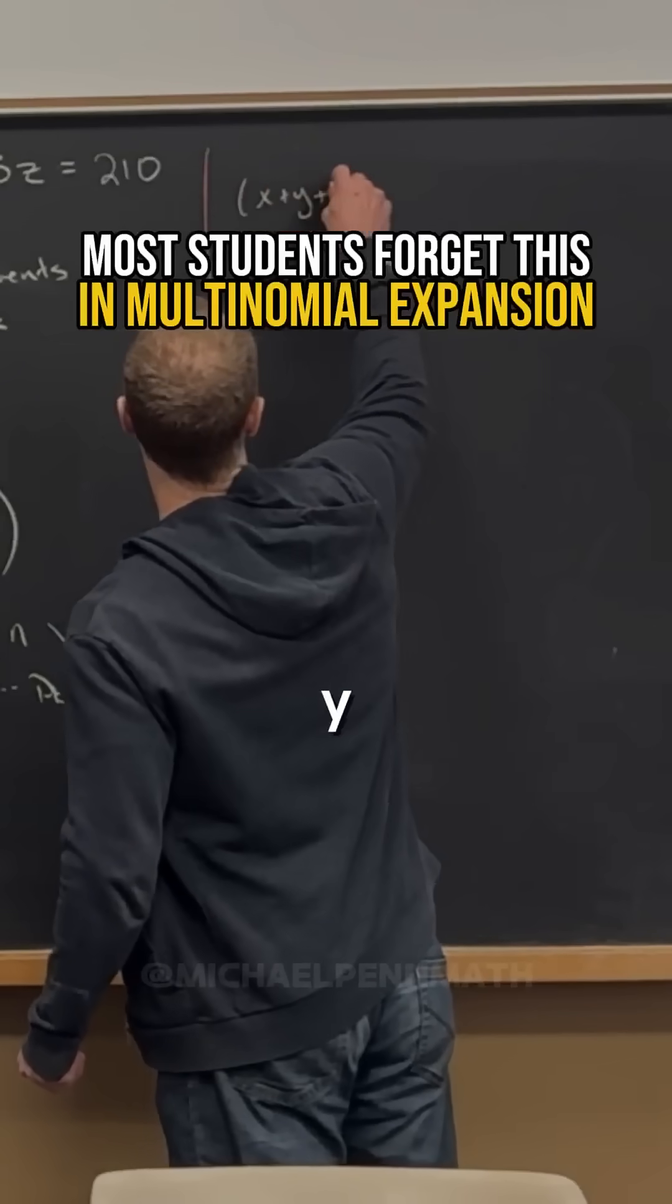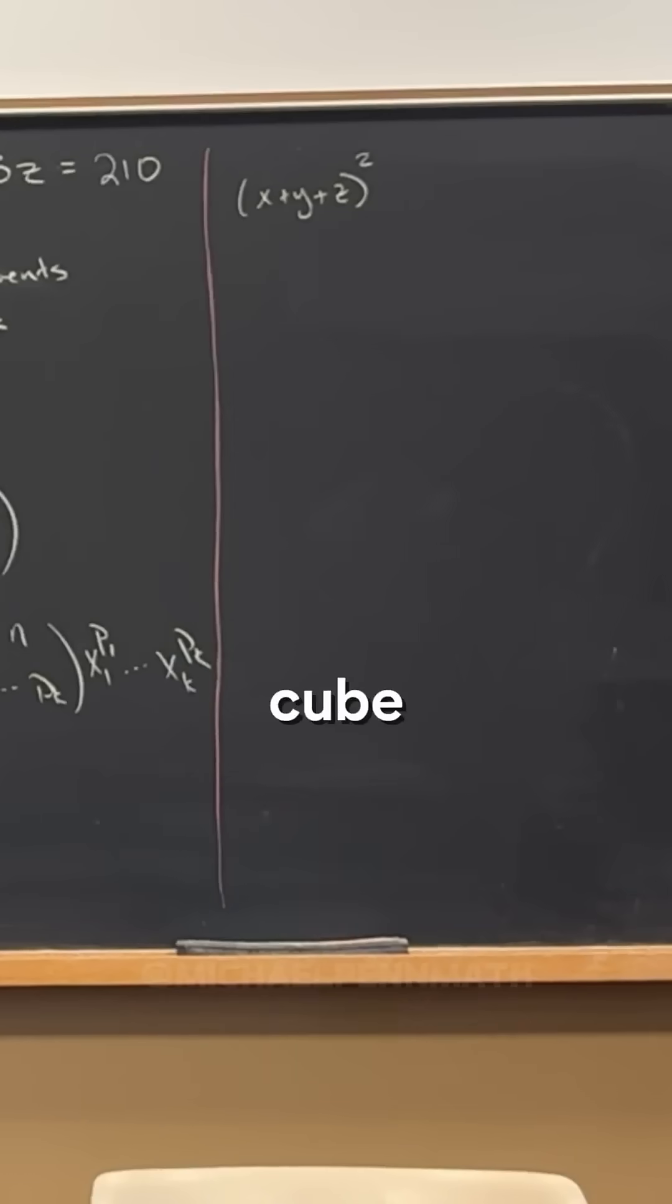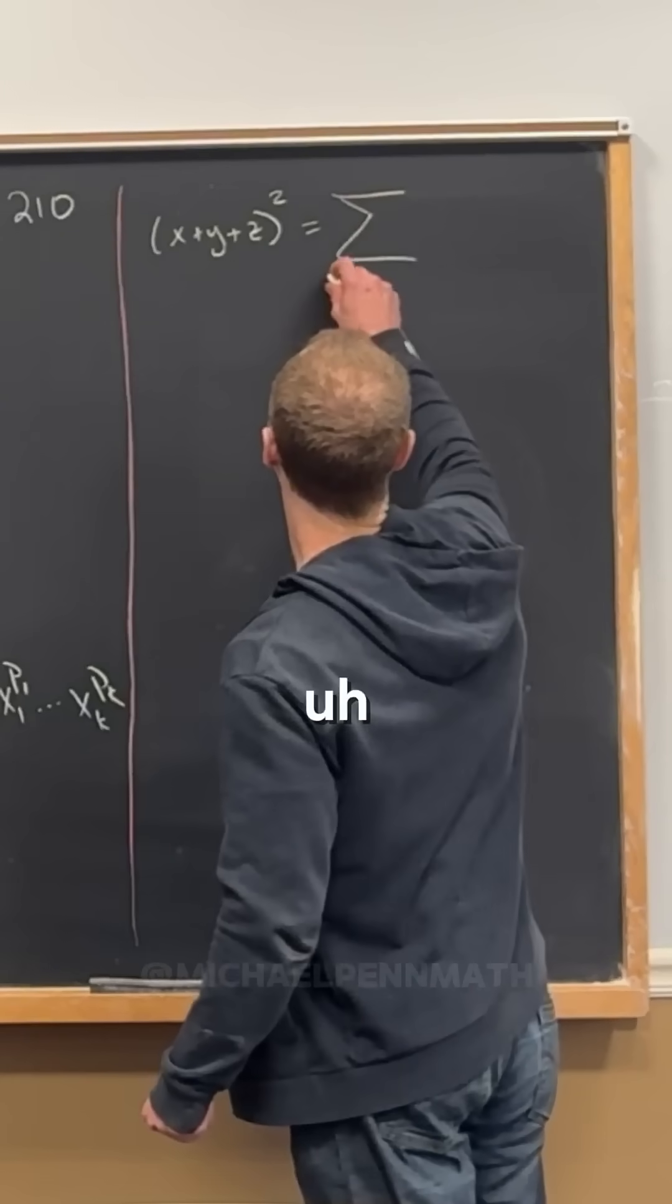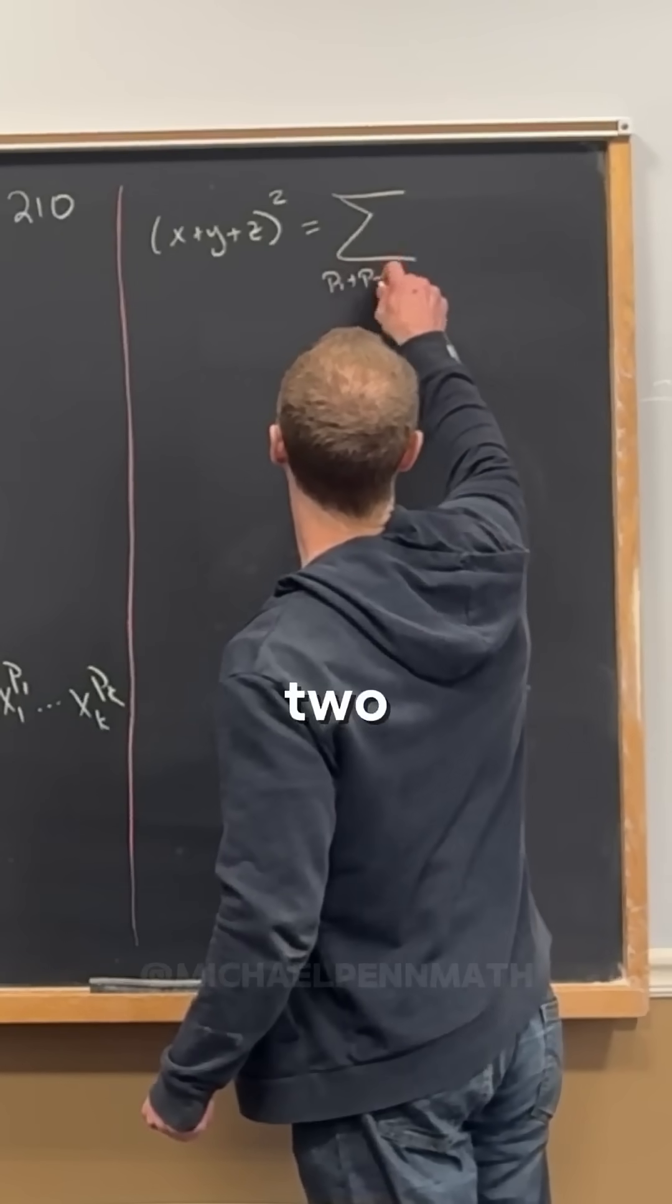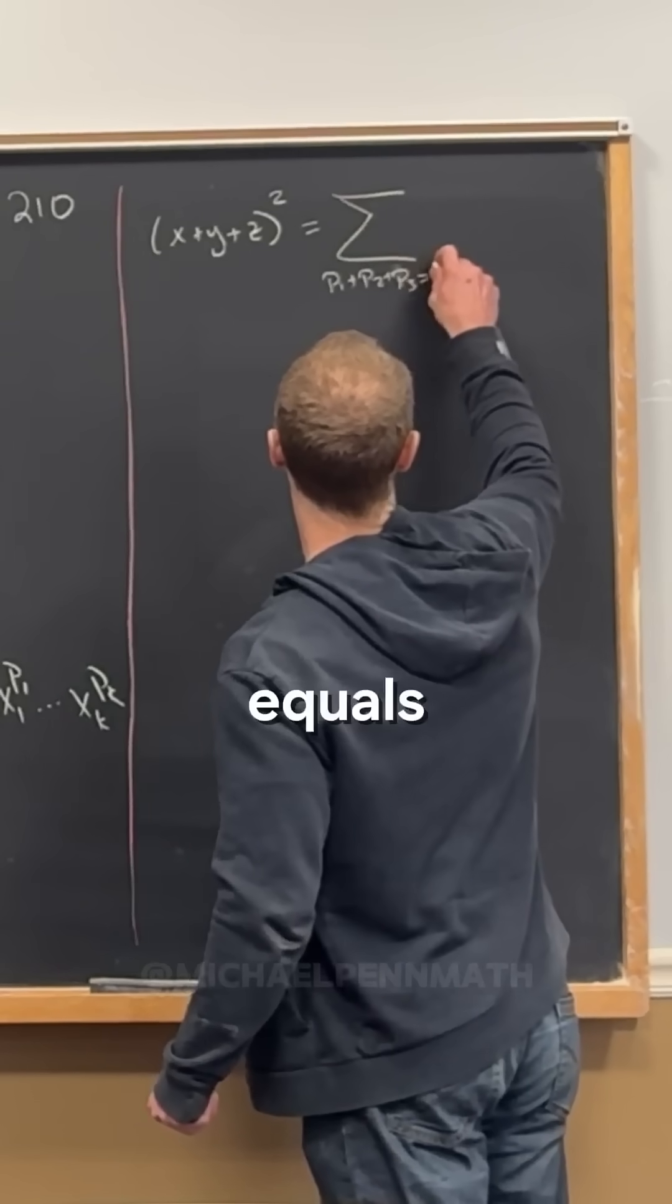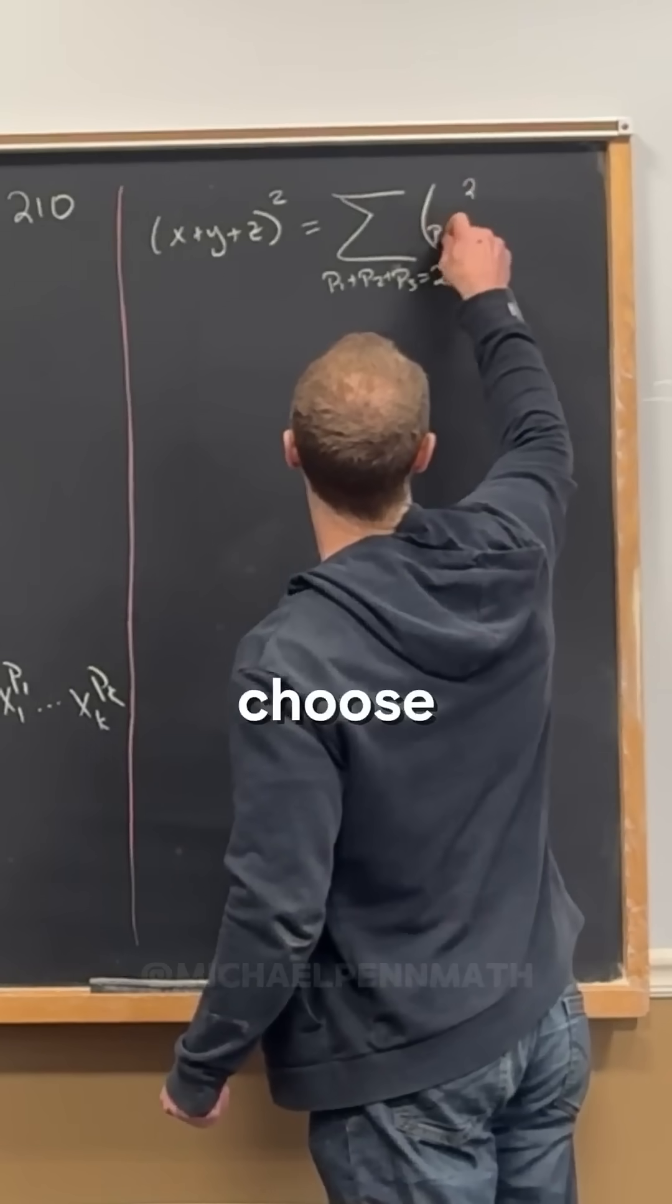Maybe look at x plus y plus z squared. So if you cube it you get a ton of terms. If you have a binomial instead of a trinomial you might as well just use binomial expansion. So this is going to be the sum over p1 plus p2 plus p3 equals two of two choose